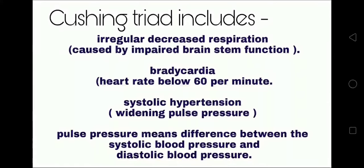Cushing's triad includes three things. The first one is irregular decreased respiration, which is caused by impaired brain stem function.